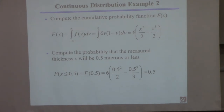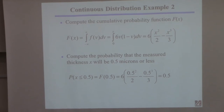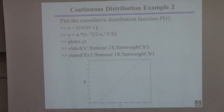You can ask: what is the probability that my thin film will be 0.5 microns or less? You might be interested in this because having a thin film too thick could be a problem. To compute it, just evaluate the cumulative distribution function at 0.5, and you'll get 50% — not surprising, given the function I chose.